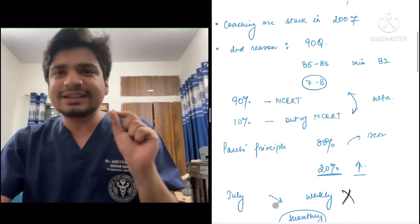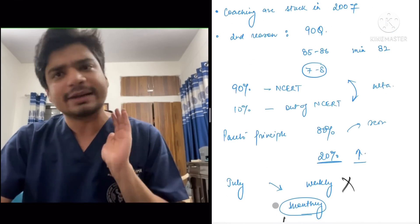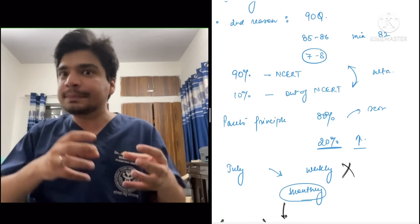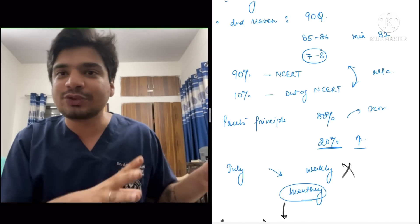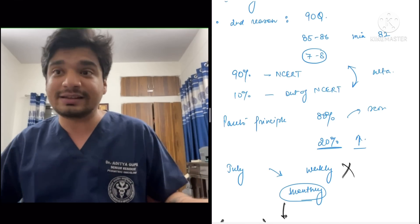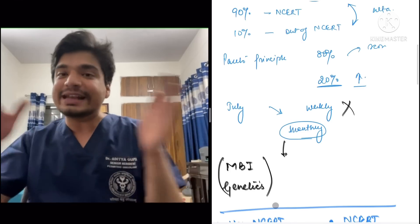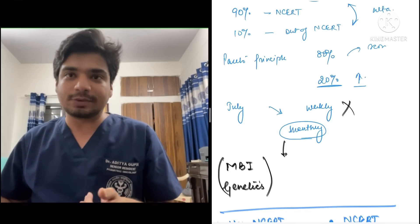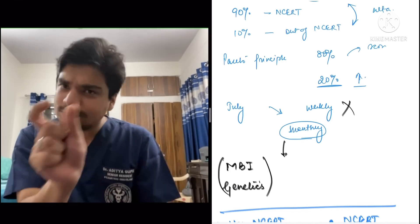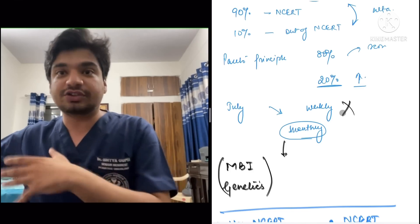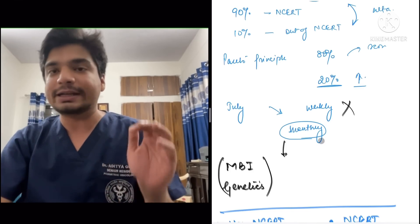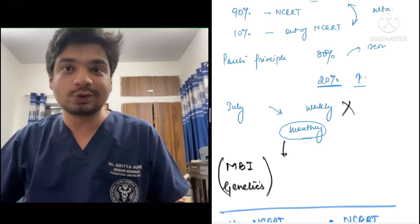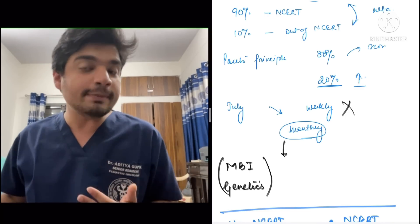Coaching is still stuck in 2007. The other reason they give is that 4-5 questions come out of NCERT. So your 90% of the time should be spent reading NCERT and 10% out of NCERT. But the labels they're giving make it feel like NCERT is just 50-60%. So there's something called the Pareto Principle, which says that 80% of your score will come from 20% of your effort. NCERT follows Pareto Principle. If you give more time to NCERT, your output will become more.